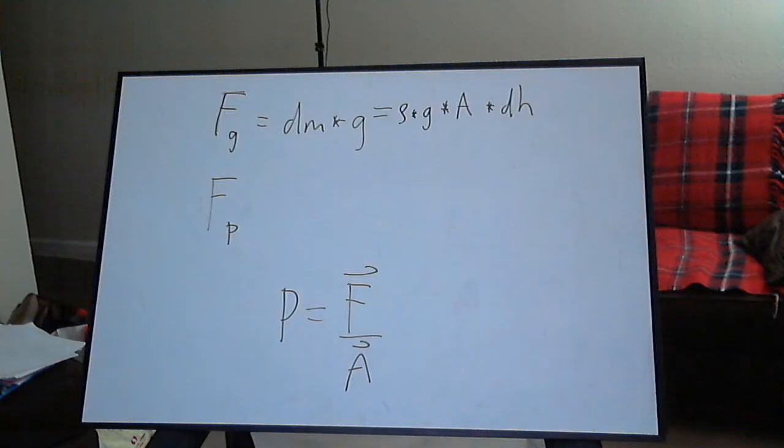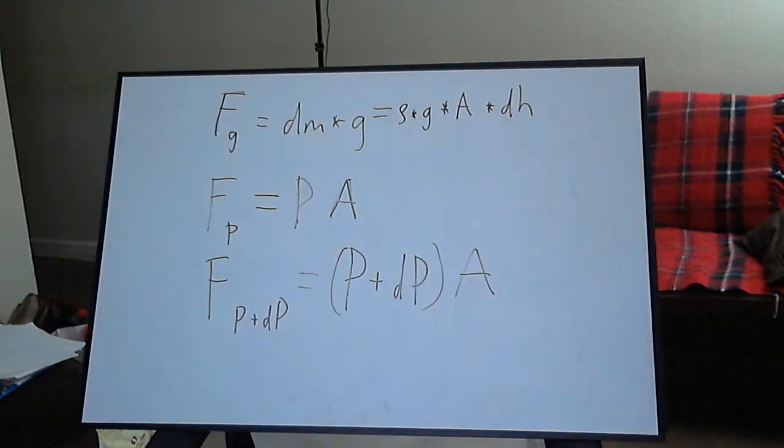To get an expression for the force due to pressure, remember that pressure is defined as the force vector divided by the area vector. Hence, the force due to pressure is just the magnitude of the pressure times the area. Similarly, we substitute in the pressure plus differential pressure, the whole thing multiplied by area, as the force expression for the pressure from below.